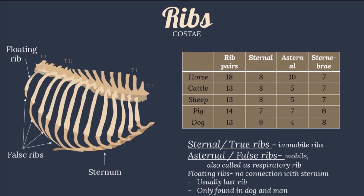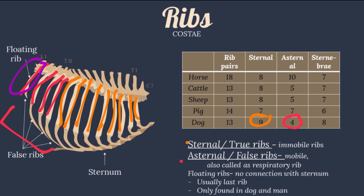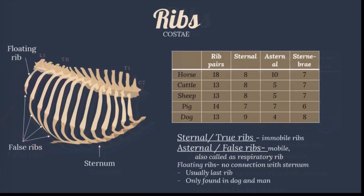Next are the ribs, or costae. They form the lateral walls of the bony thorax. Usually, the number of pairs of ribs is the same as the thoracic vertebrae. The sternal, or true, ribs articulate with the sternum by means of their costal cartilage, also known as mobile ribs. For the asternal, or false, ribs, the cartilages are fused to form the costal arch, also known as respiratory ribs because they are mobile. In the floating ribs, there is no connection with the sternum and no cartilage is present. It is usually the last rib, found only in dog and man.